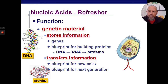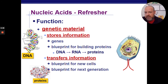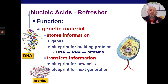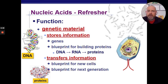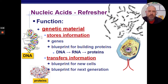For the nucleic acids refresher: the function is the genetic material — storing information and transferring information. DNA holds the important information for building proteins and is the blueprint. We have to pass on that blueprint to the next generation, so heredity plays a role in that as well.